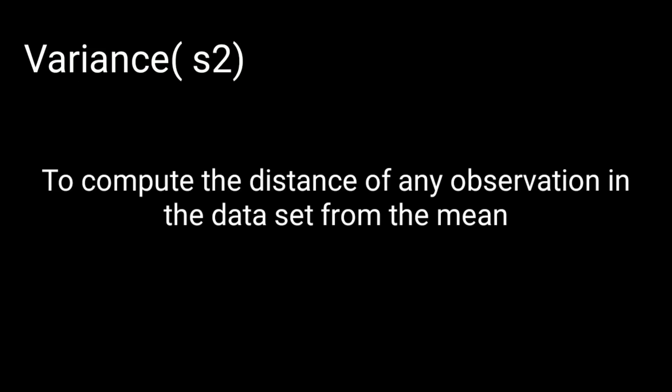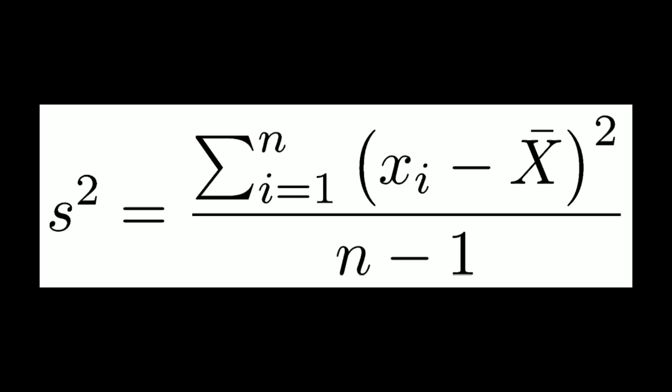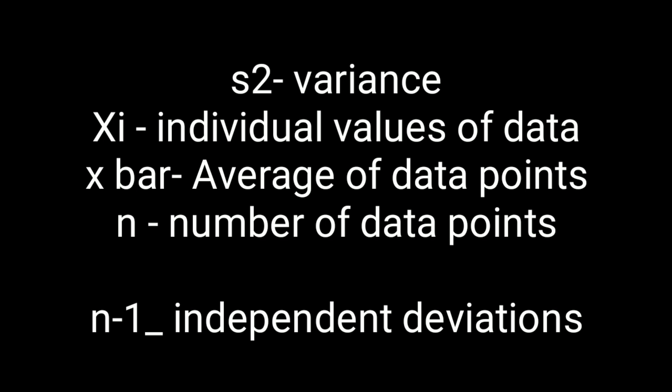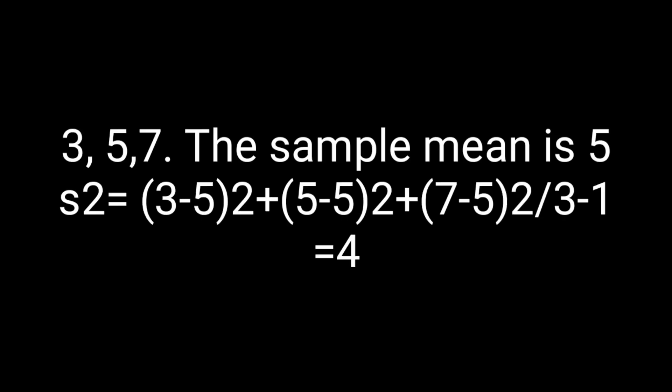Variance, denoted by s², computes the distance of any observation in the data set from the mean. The formula is: s² = Σ(xᵢ − x̄)² / (n − 1), where s² is the variance, n is the number of data points, and x̄ is the average. We divide by n − 1 because there are only n − 1 independent deviations. For the sample data 3, 5, 7 — with sample mean 5 — the variance is 4.